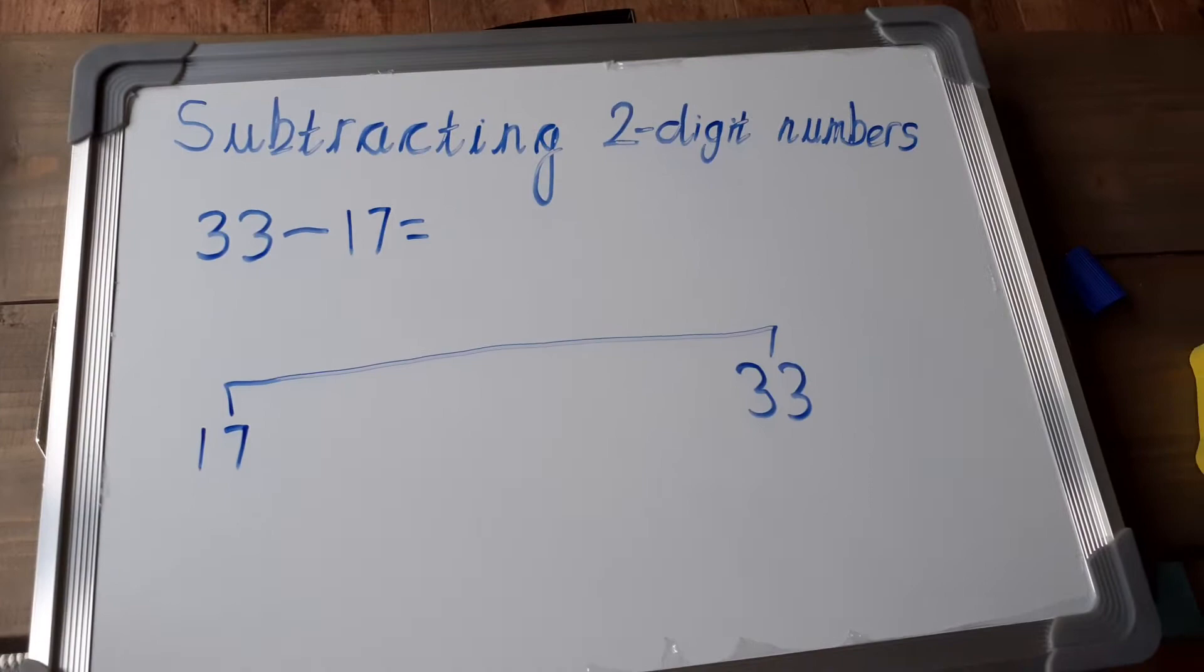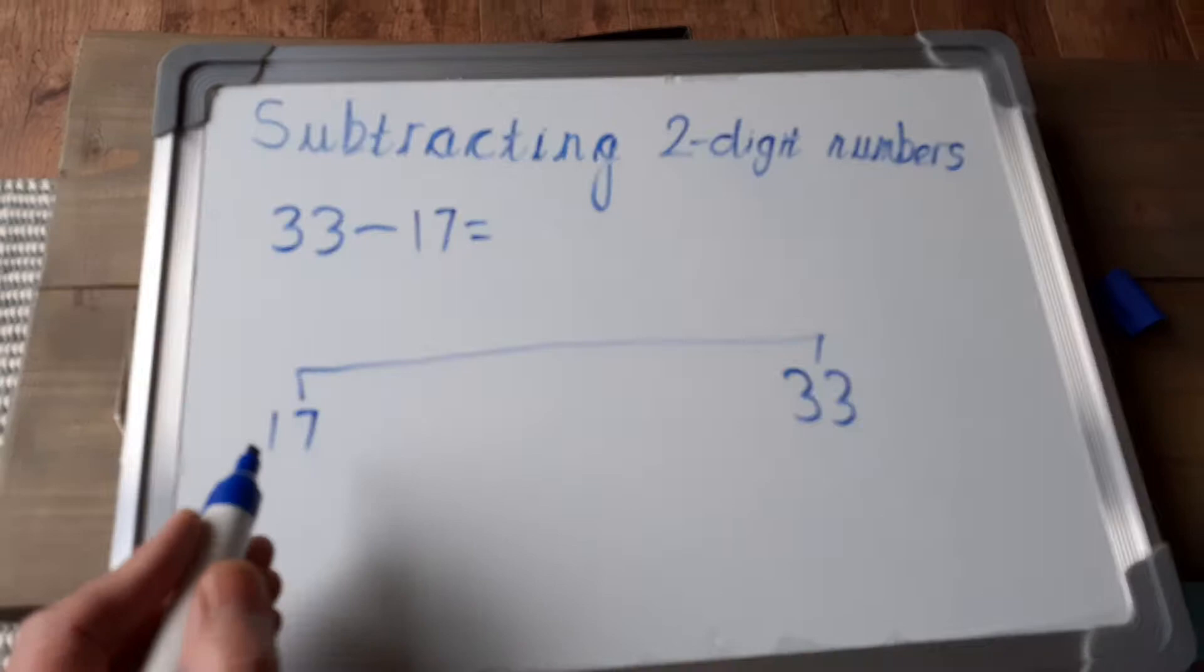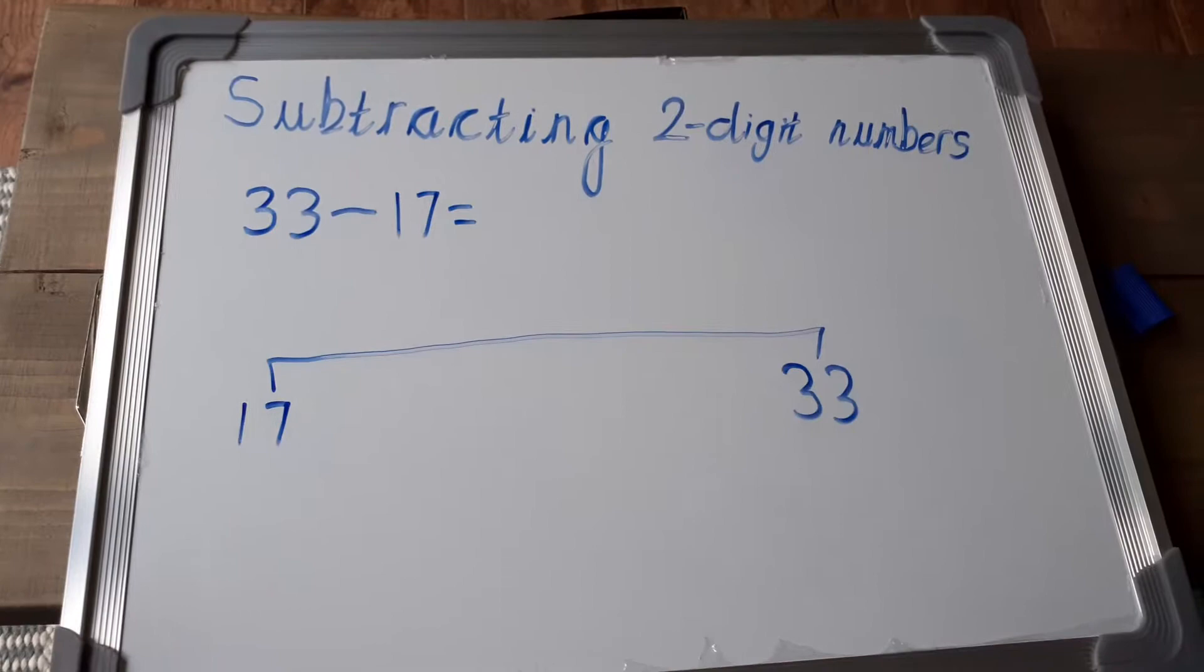So starting from 17, which is at the left-hand side of the number line, we're going to add a number to get up to the next multiple of 10. So multiples of 10 are 10, 20, 30, 40, etc.